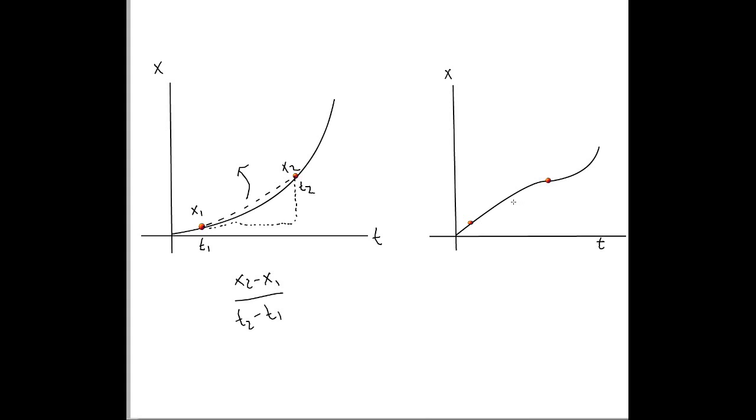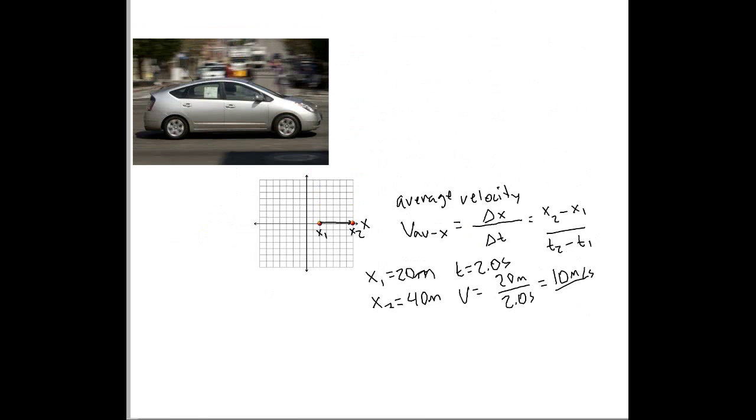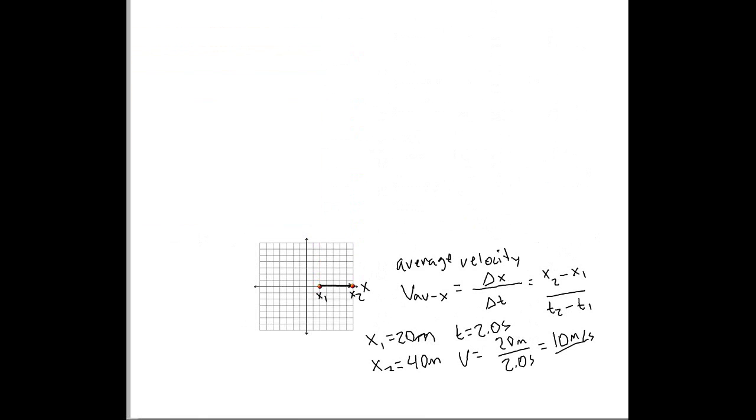So, average velocity is not path-dependent. Now, average velocity can't tell us very much. It can't tell us the magnitude and direction of the velocity, say, right here or right here or anywhere in between this line. It can only tell you the distance over this time interval. So, to do that, we are going to be using instantaneous velocity.